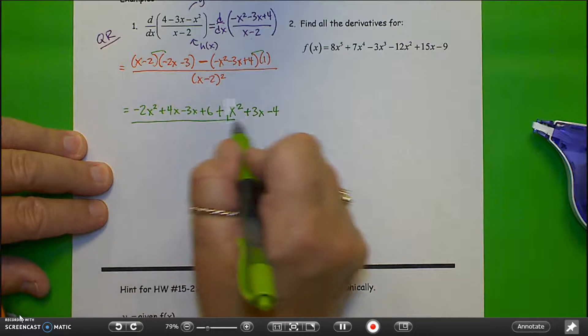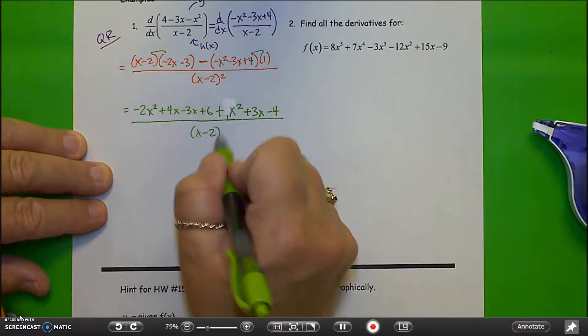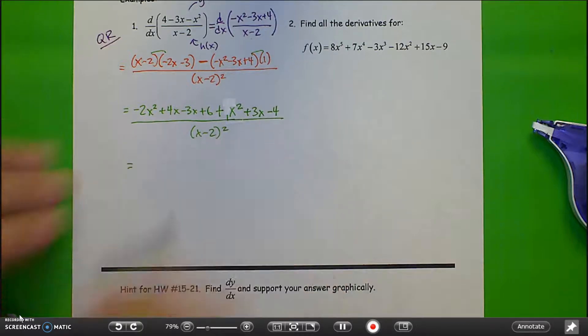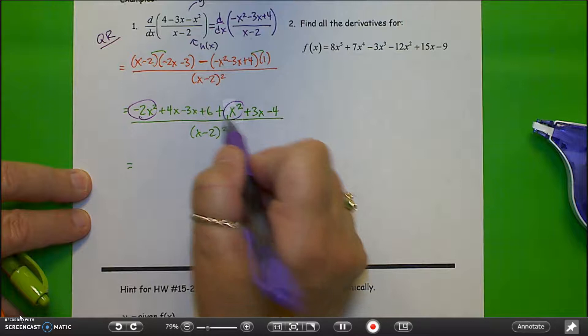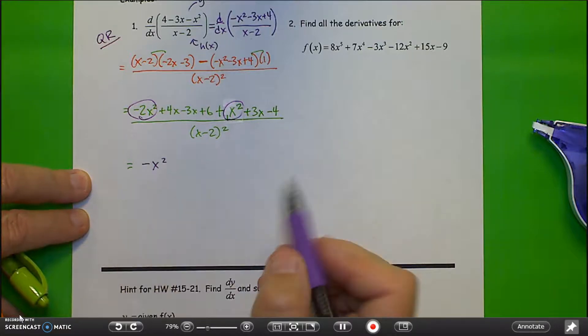So I'm going to have plus x squared plus 3x minus 4. Alright, and this is all over x minus 2 squared. Do not multiply out the denominator. Okay, now I've just combined like terms. Let's see, my x squareds, I have a minus x squared and a plus x squared, so that leaves me with a minus x squared.